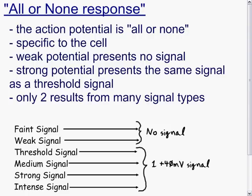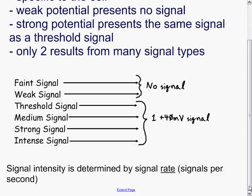Rather than increasing or decreasing the strength of the signal, you increase or decrease the rate of the signal, or the number of signals per second. So signal intensity is determined by signal rate or the number of signals per second.